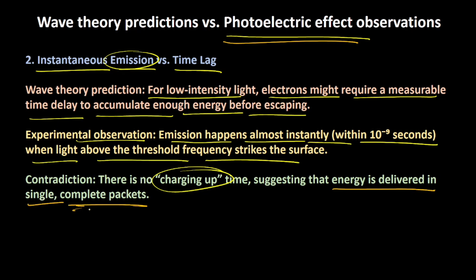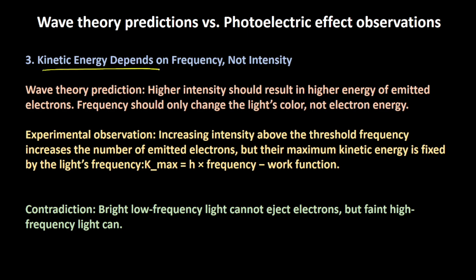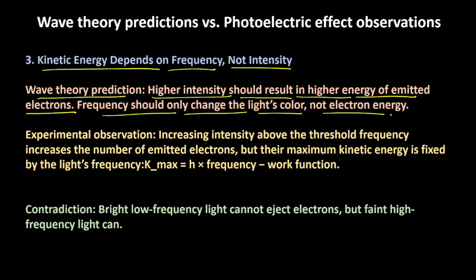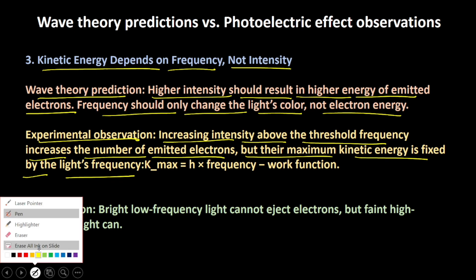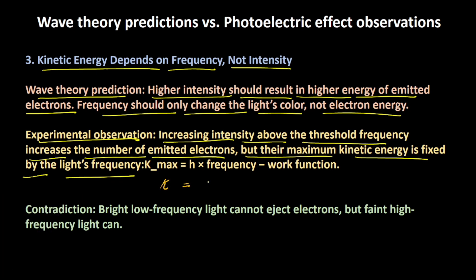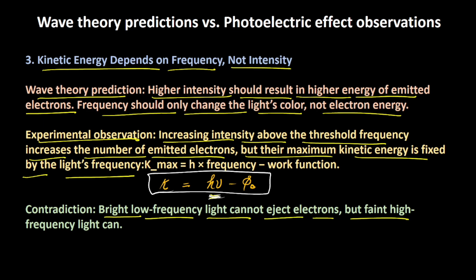The photoelectric effect suggests that energy is delivered in single complete packets. The last contradiction is that kinetic energy depends on frequency, not intensity. The wave theory predicted that higher intensity should result in higher energy of the emitted electrons, and frequency should only change the light's color, not the electron energy. But the experimental observations show that increasing the intensity above the threshold frequency increases the number of emitted photoelectrons, but their maximum kinetic energy is fixed by the light's frequency. As we saw in the equation, maximum kinetic energy equals H nu minus the work function phi. Kinetic energy depends on the frequency, not the intensity. The contradiction here is that bright low-frequency light cannot eject electrons, but faint high-frequency light can.